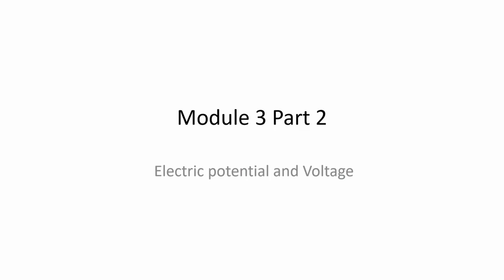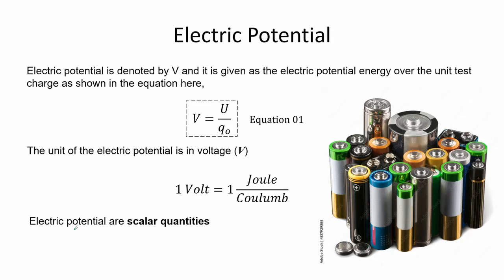In this module we continue what we discussed earlier regarding electric potential energies, but now focused on electric potential. Here we have batteries differentiated by the amount of voltage they can give. Electric potential, denoted by V, is related to electric potential energy as shown by equation 22. Electric potential is what we commonly call voltage. The unit for electric potential is volts, and 1 volt is equal to 1 joule per coulomb. It is a scalar quantity.